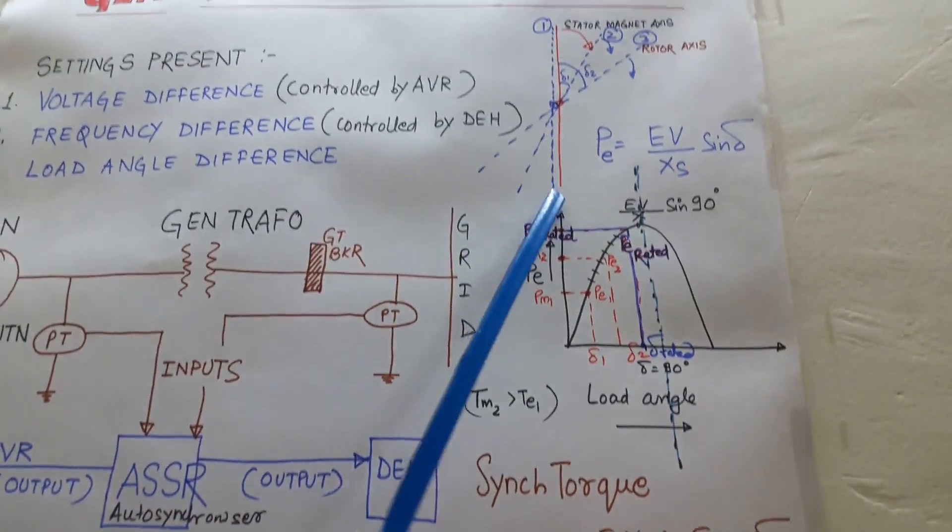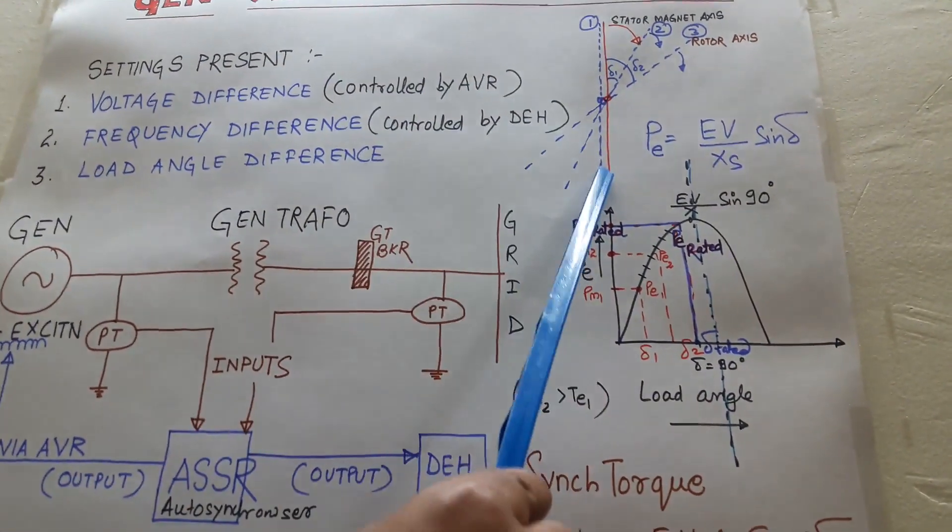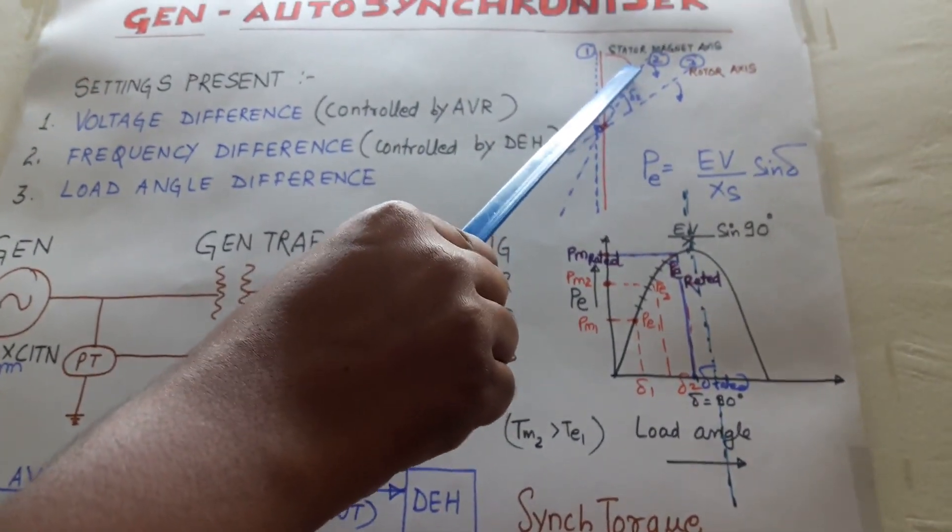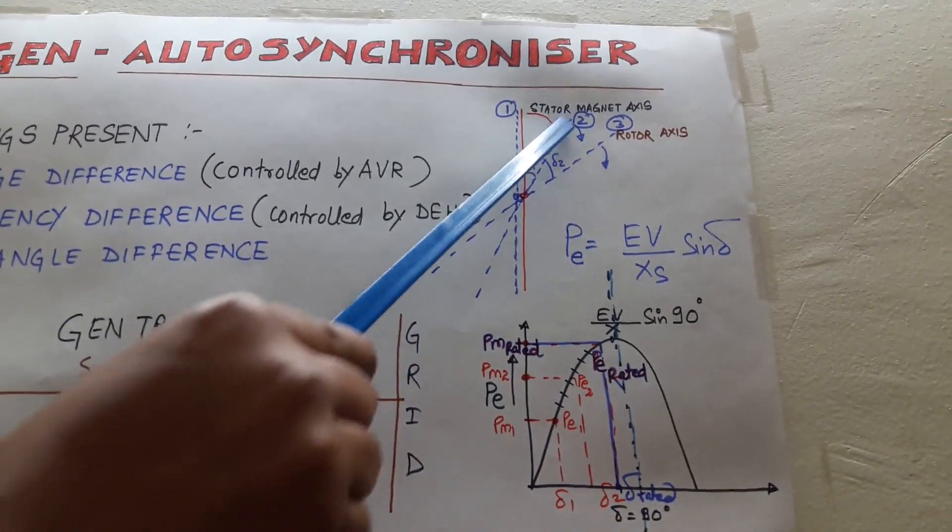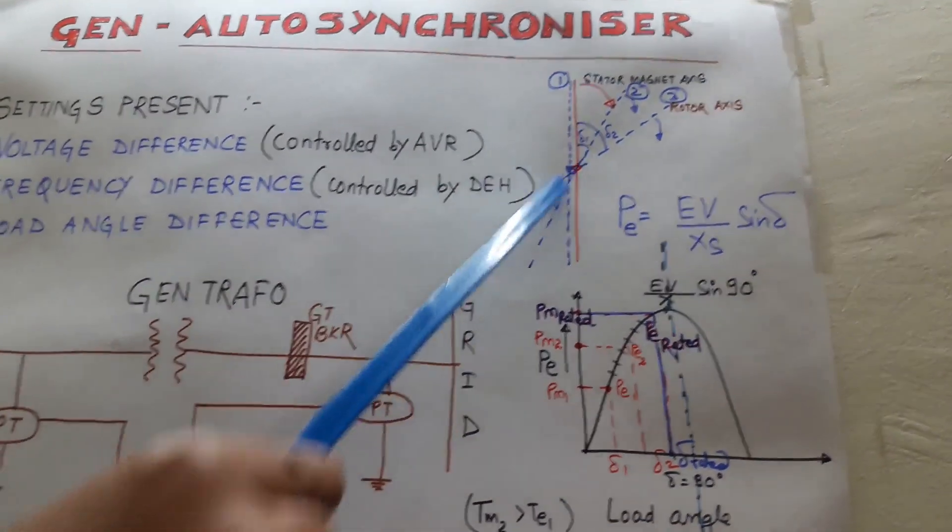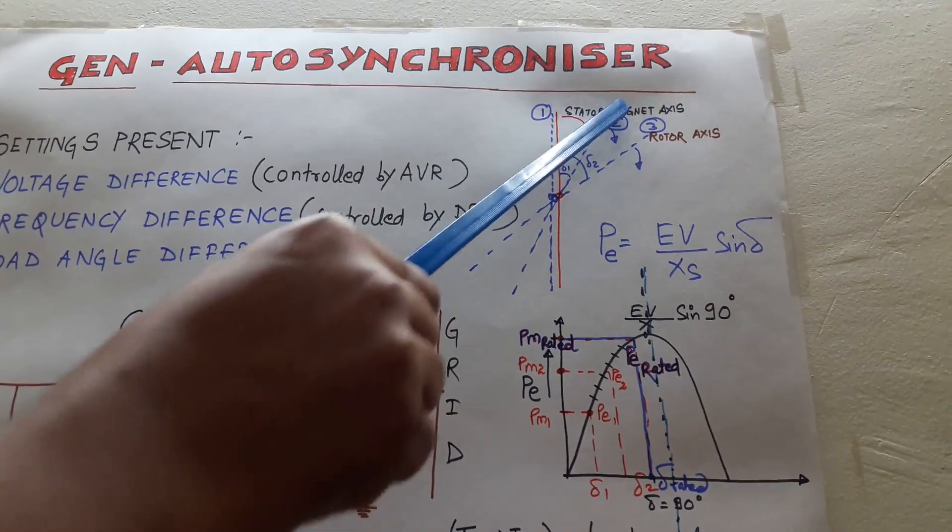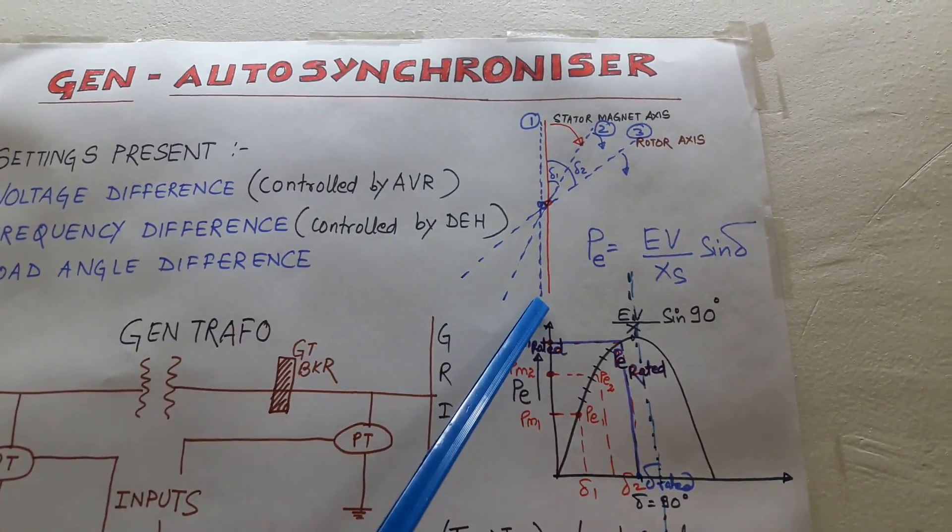Here I have shown suppose this one is stator magnet axis which rotates at synchronous speed, and this speed is constant. This is the rotor axis. It depends upon the speed of the rotor. We have the control of this axis, we don't have the control of stator magnet axis.